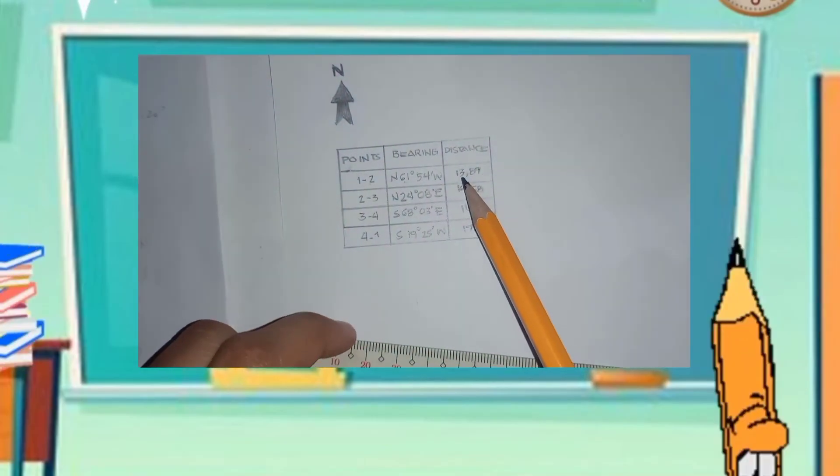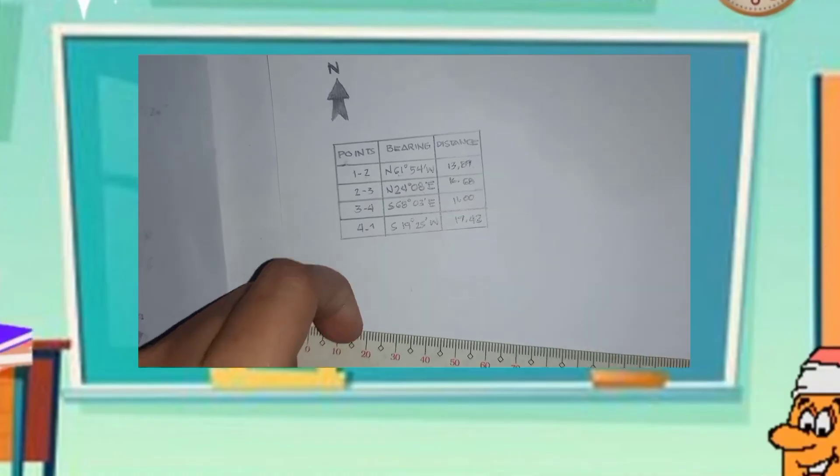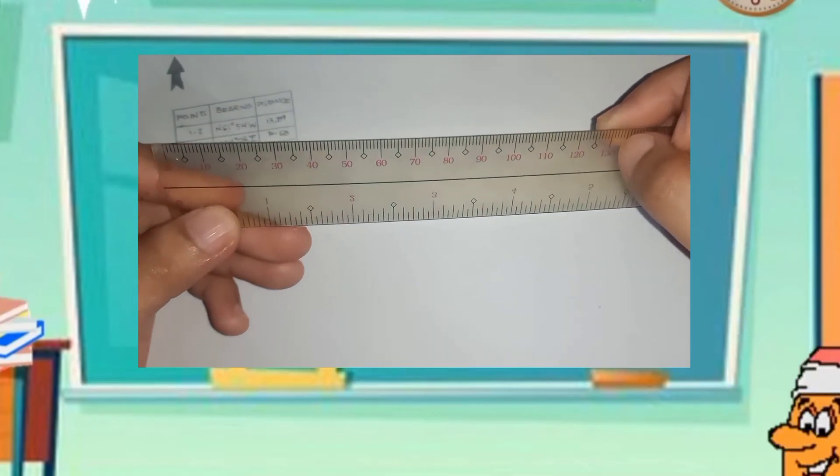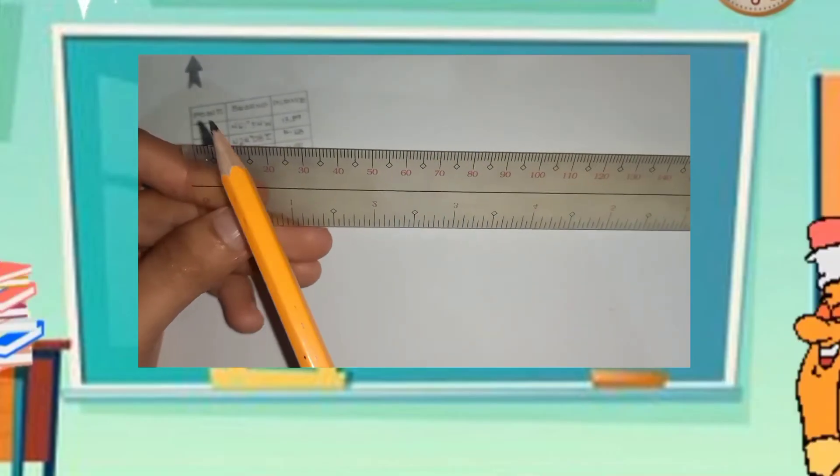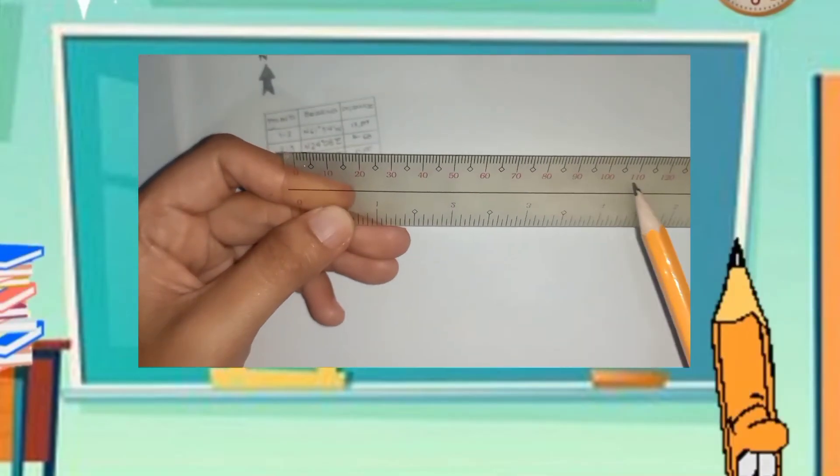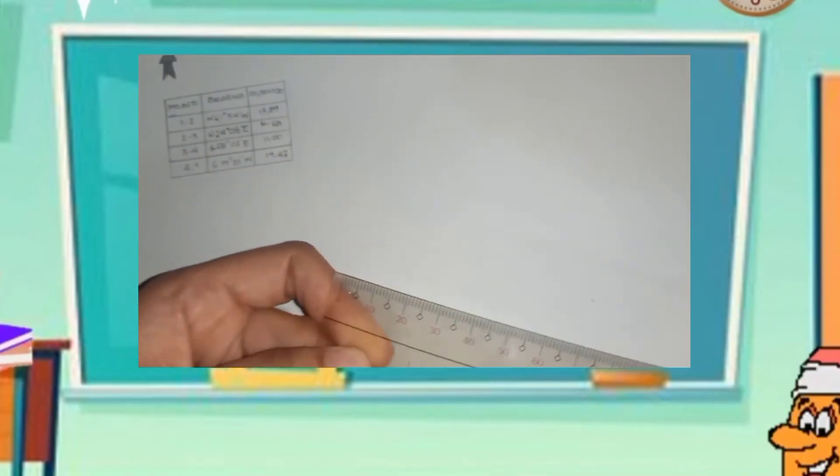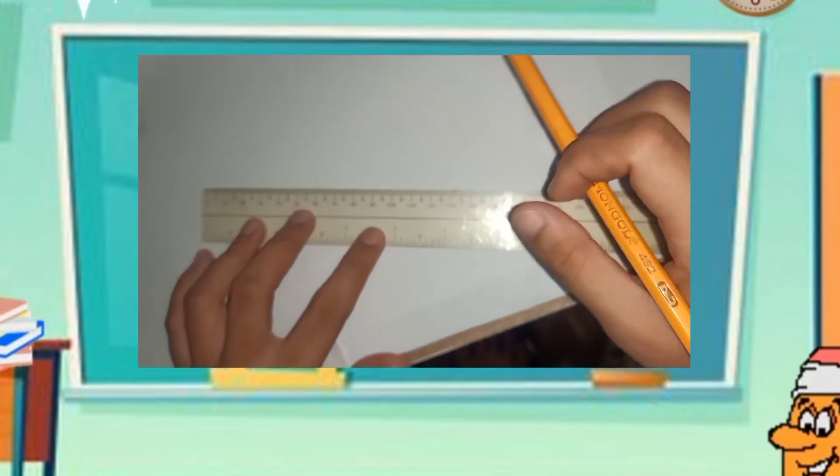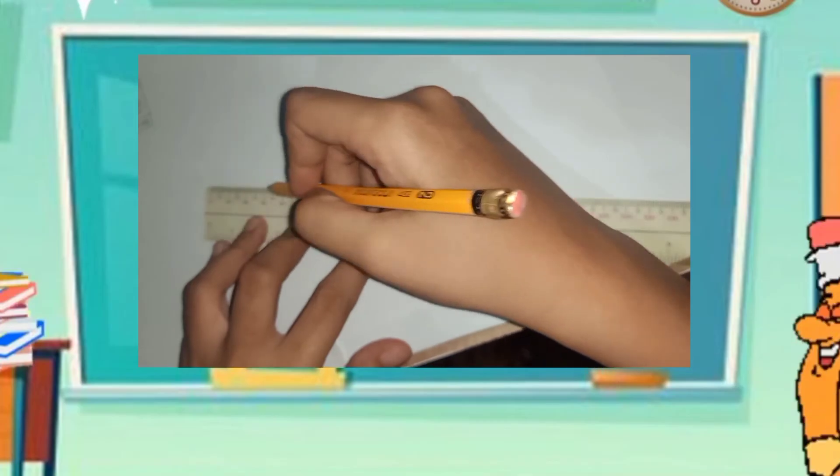Extend the bearing line, the distance using a ruler. You can use the scale 1 to 200, so the measurement or the distance will be reduced on its size. By 1 is to 200 scale, you just simply divide all the measurements and distance into 2.